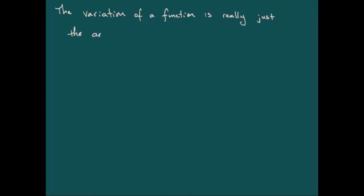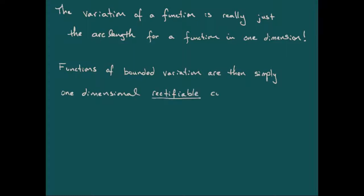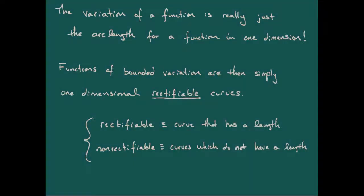And sure enough, that is the variation of f with respect to our partition p that we took. So what are we really doing when we're calculating the variation with respect to a parameter? We're approximating the arc length for a curve in only one dimension. That's what we're doing when we're measuring total variation. So our total variation, as these things get longer and longer, is nothing more than the arc length of a curve in one dimension.